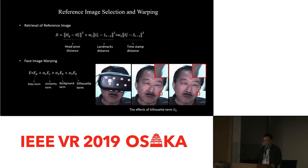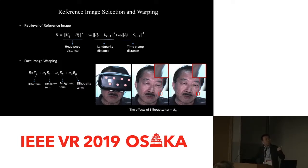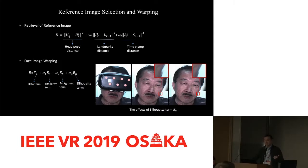Our last step is the composition. We have a large part of the face that is occluded, so we tried inpainting but it did not work very well. We ended up having to use reference images — images captured earlier to construct the 3D model. Based on our tracking results — head pose, landmarks, and a temporal constraint — we pick an image from the reference sequence that is closest in terms of head pose distance and landmark distance. From that reference image, we warp it to the current input frame based on the landmarks.